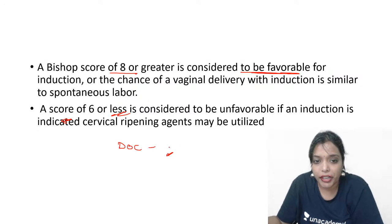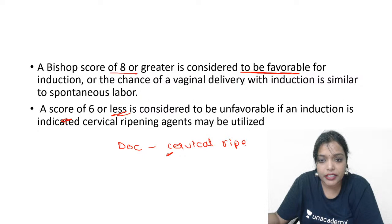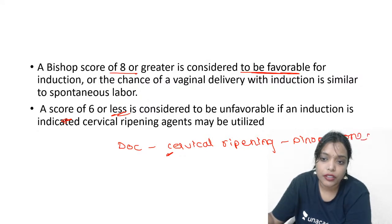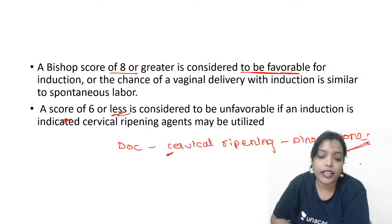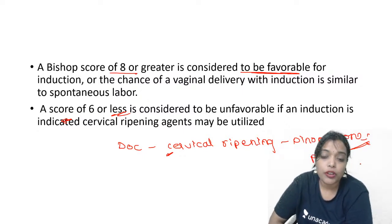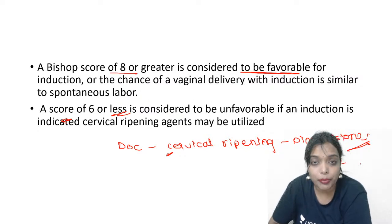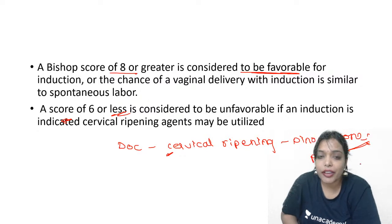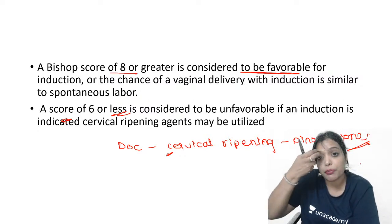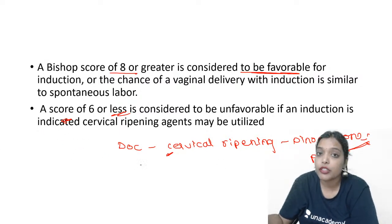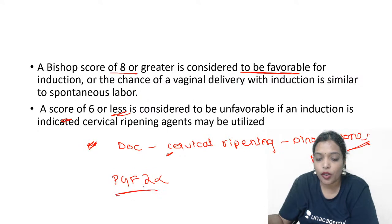The drug of choice for cervical ripening is Dinoprostone — that is PGE2, also called cerviprime gel. The only side effect with Dinoprostone is it causes uterine hyperstimulation which can lead to fetal distress and meconium staining. We also use misoprostol and nowadays mifepristone for induction of labour. PGF2 alpha should never be used for induction of labour.